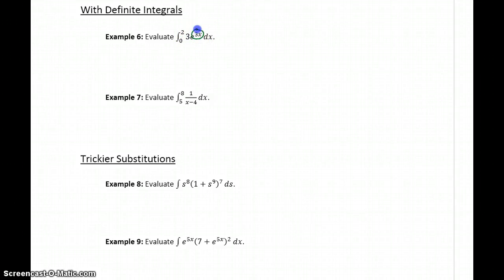So we'll still start off by identifying the interior function, so in this case e to the 3x. 3x is our interior function, so we'll let u equal 3x, which means that du over dx equals 3, or that du equals 3dx.